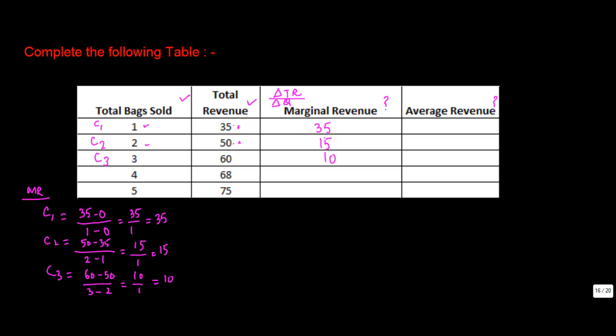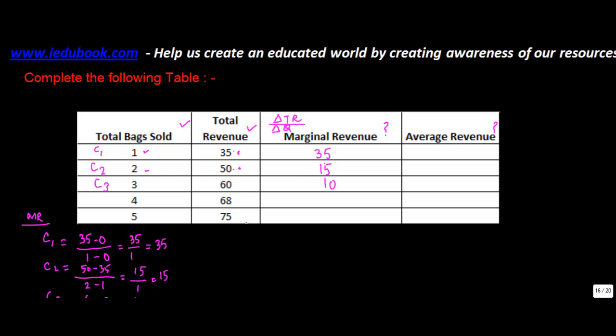Now I think we've done quite a few calculations and we can try and do it here only. Case 4. What's the increase in revenue? 68 from 60. So what's the increase? It's 8 divided by change in quantity. It has increased from 3 to 4. 4 minus 3 is 1. 8. Similarly, this will come to 7. So that's how you compute your marginal revenue.